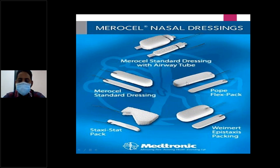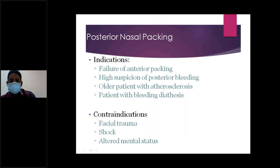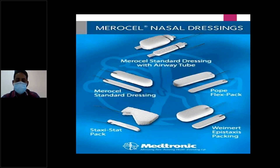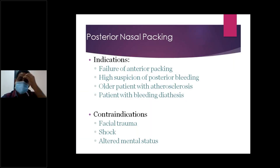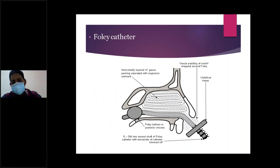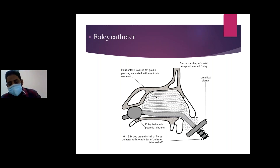Another anterior nasal pack material is a nasal tampon — about seven to ten centimeters in length — inserted into the nasal cavity and inflated with water, normal saline, or a steroid solution so that it swells and provides compression. This can also be used for anterior nasal packing. If there is high suspicion of posterior epistaxis — bilateral bleeding, blood coming from the oral cavity, especially in older people — posterior nasal packing should be performed.